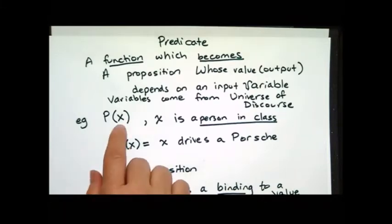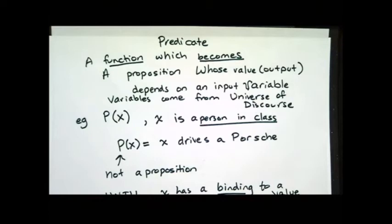So for example, I have P of X where X comes from some person in class. That would be my universe of discourse, so that's where I'm pulling my variable from.